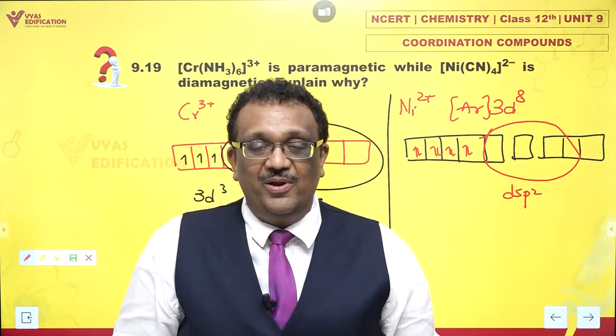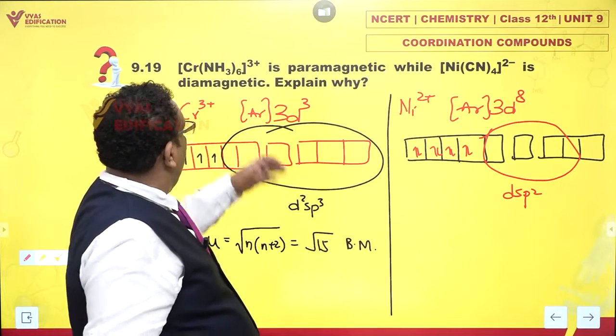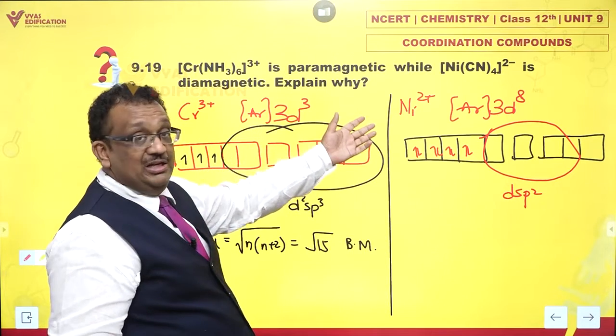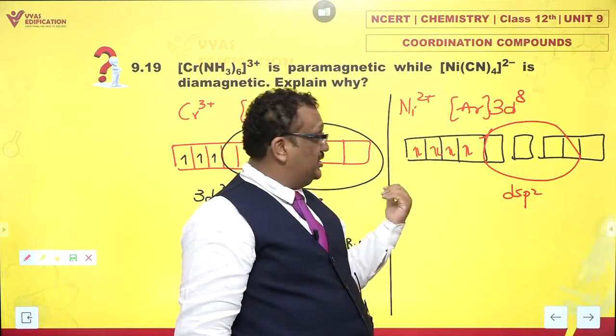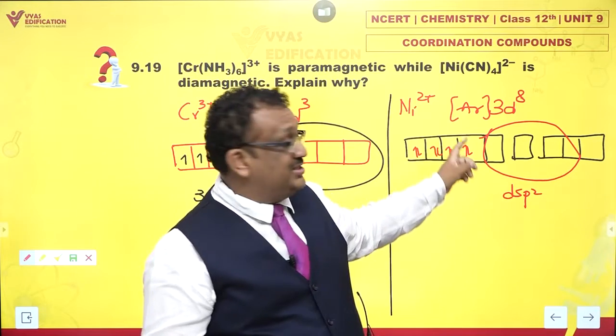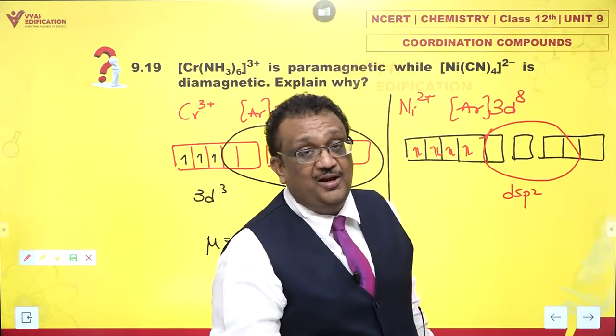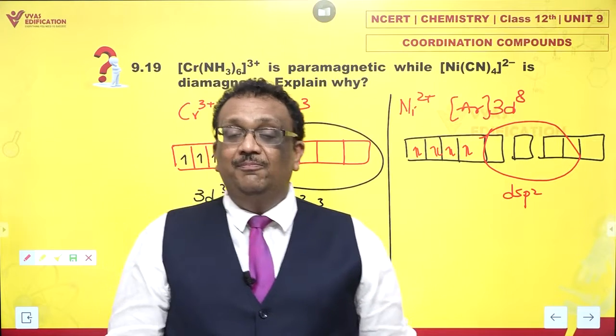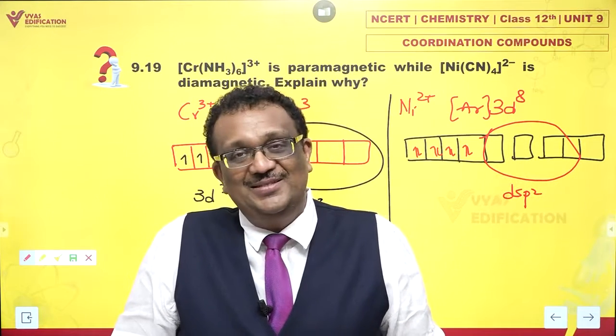This is the valence bond theory explanation of why chromium is paramagnetic while nickel is not. Cyanide ion pairs up all the unpaired electrons. And since no unpaired electrons are left on nickel or on the complex, it becomes diamagnetic. As simple as this.